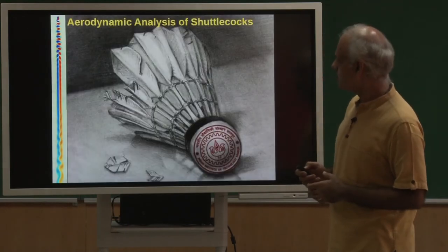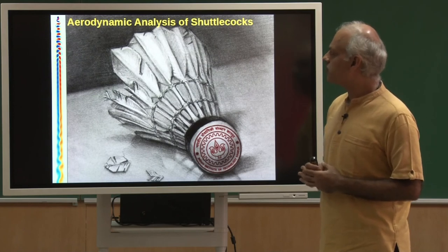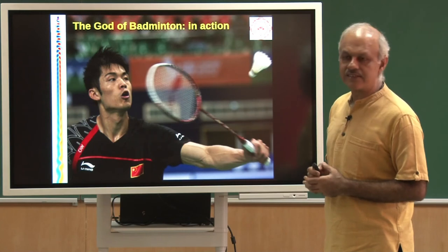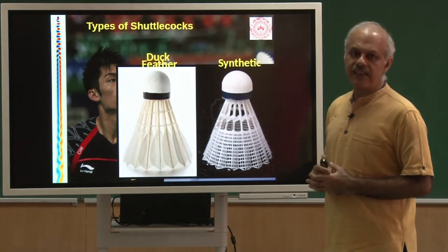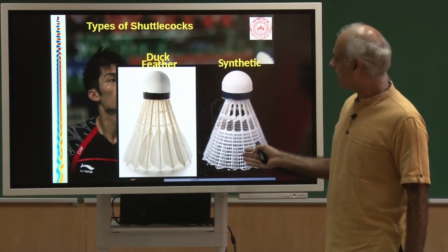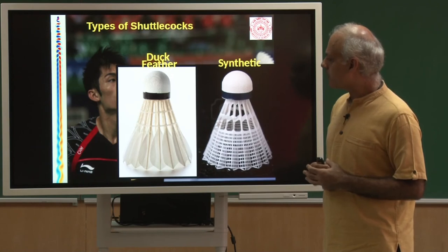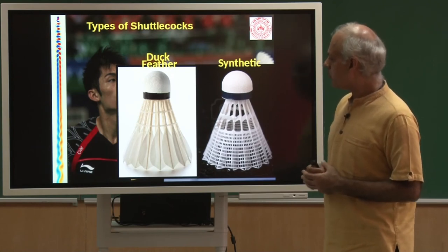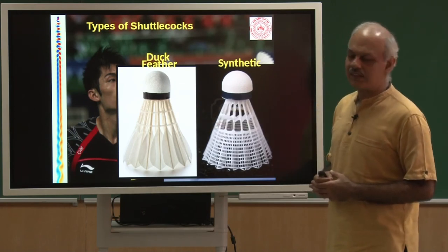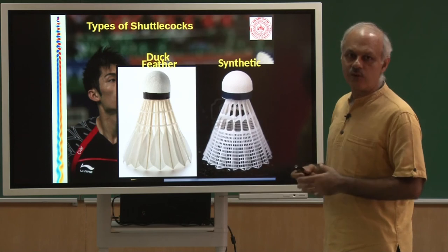I would now like to move on to the shuttlecock and show you how its aerodynamics becomes extremely important. One of the famous players is Linden. There are two kinds of shuttles commonly used: a duck feather shuttle and a synthetic shuttle. The synthetic has longevity and can last for many games. The duck feather shuttle is brittle and raises concerns about harm to animals. It would be interesting to see how to design a synthetic shuttlecock so that it behaves exactly like a duck feather shuttlecock — so far synthetic shuttlecocks do not behave the same way.